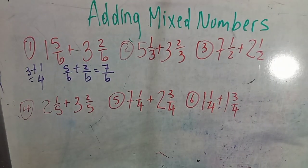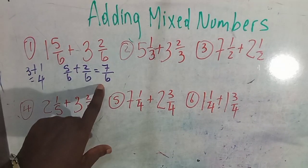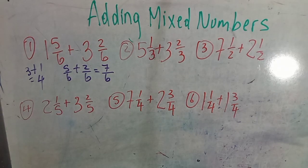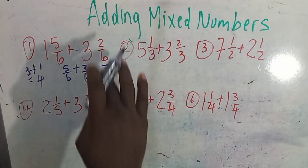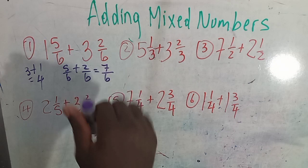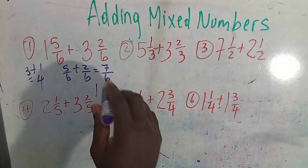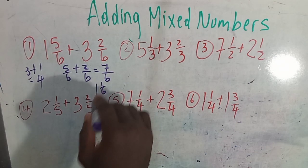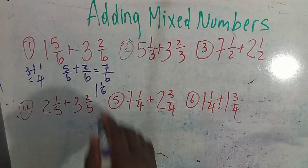This is an improper fraction. We do not leave our answers as an improper fraction. 6 into 7 goes 1, with a remainder of 1 over 6.